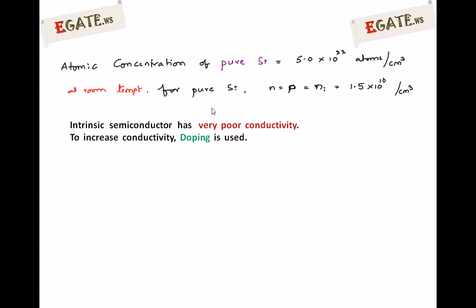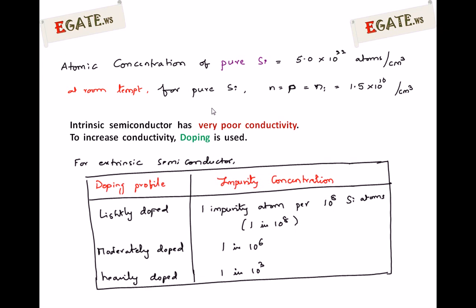In practice, intrinsic semiconductors are never used. Always extrinsic semiconductors — either N-type or P-type — are used. For an extrinsic semiconductor, we add an impurity called a dopant. Depending on the dopant profile, it may be lightly doped, moderately doped, or heavily doped.